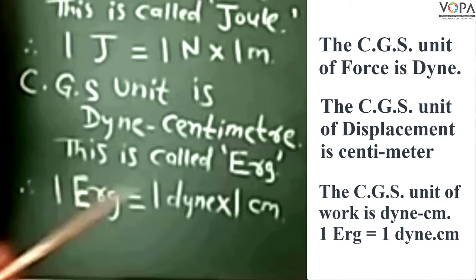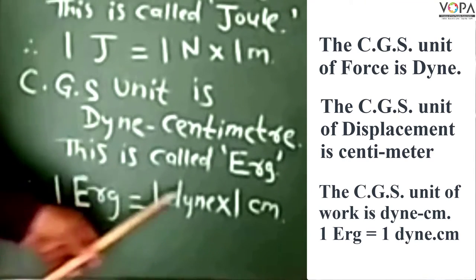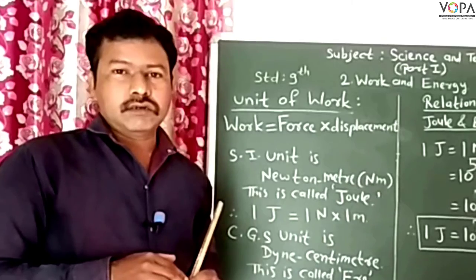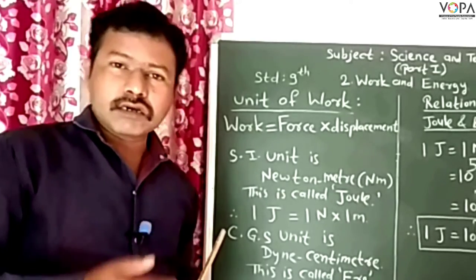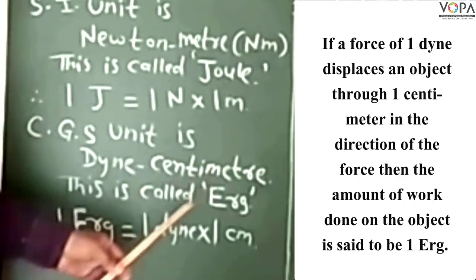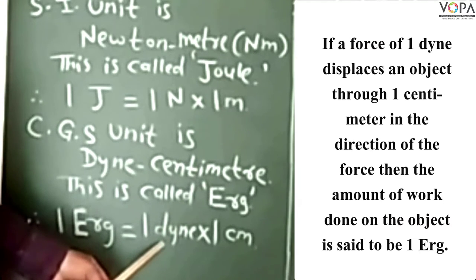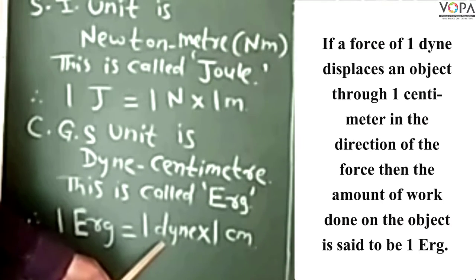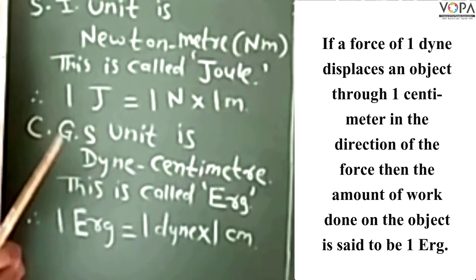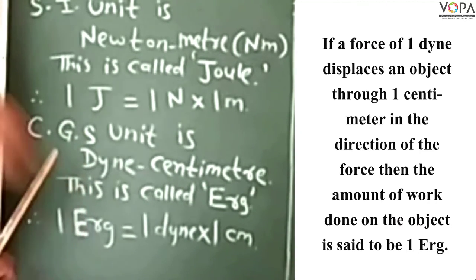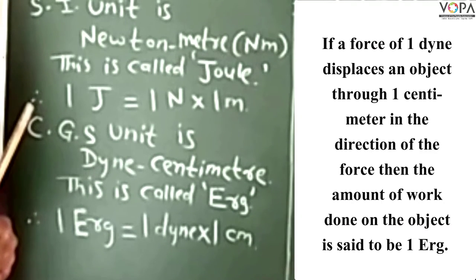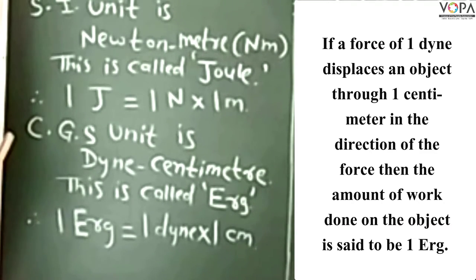So we can write: 1 erg is equal to 1 dyne into 1 centimeter. Just like 1 Joule, we can define 1 erg — if 1 dyne of force displaces an object through 1 centimeter in the direction of the force, the amount of work done on the object is said to be 1 erg.